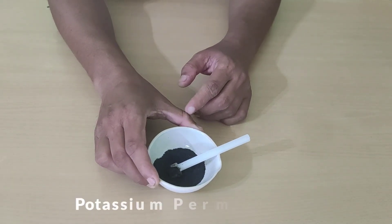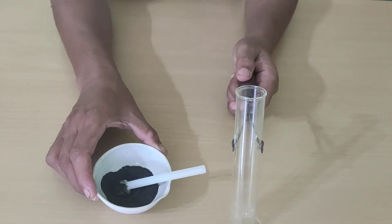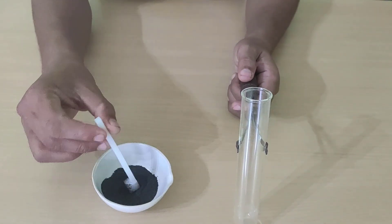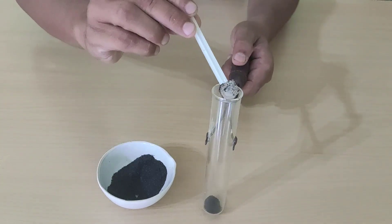This is potassium permanganate powder. We will take this powder in this test tube. We will take 2-3 grams.